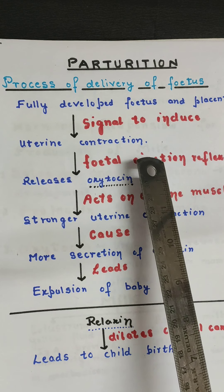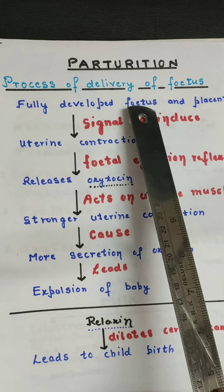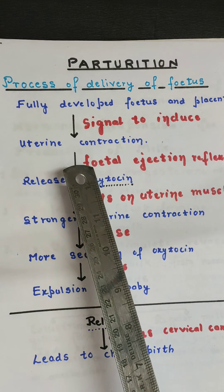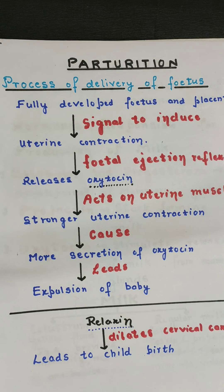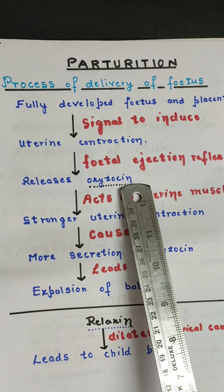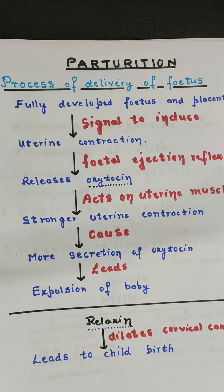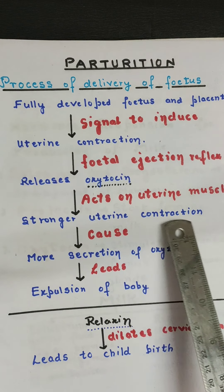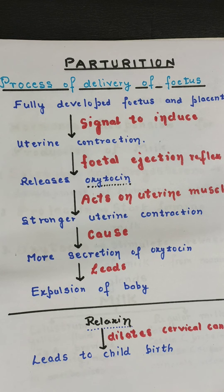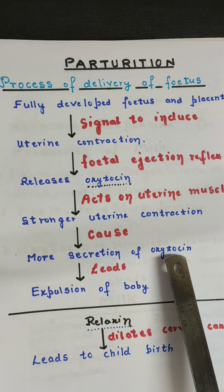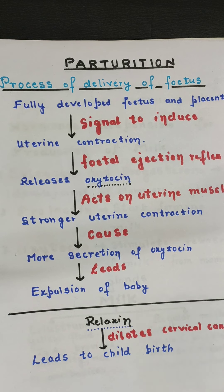Remember: the fetus and placenta induce a signal which brings contraction in the uterus — this is the fetal ejection reflex. A signal then goes to the posterior pituitary, which releases a hormone known as oxytocin, also called the birth hormone. Oxytocin acts on the uterine muscles, causing stronger uterine contractions. More contractions lead to more secretion of oxytocin, and ultimately the contractions become so strong that expulsion of the baby occurs.